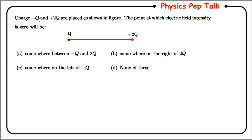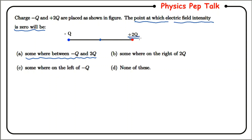Next question: charges minus q and plus 2q are placed as shown in the figure. At which point is the electric field intensity zero? If we consider any point between minus q and plus 2q, the electric field due to minus q and due to plus 2q both point in the same direction at that location. Therefore the net electric field is not zero between the charges, and option A is wrong.